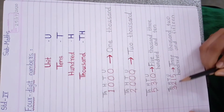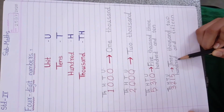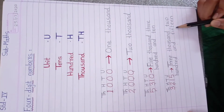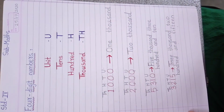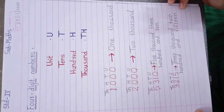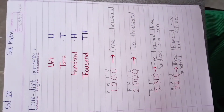So we read it as 3000, then 200 and 15 — giving us 3215. Understand how we read a 4-digit number. Thank you.